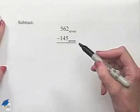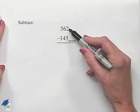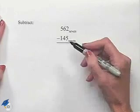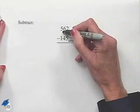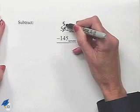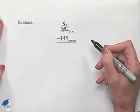We begin in the ones place trying to subtract 5 from 2. Because we can't do the subtraction as 2 is smaller than 5, we borrow 1 from our next place value. That makes this a 5 and we bring that 1 over to the ones spot.